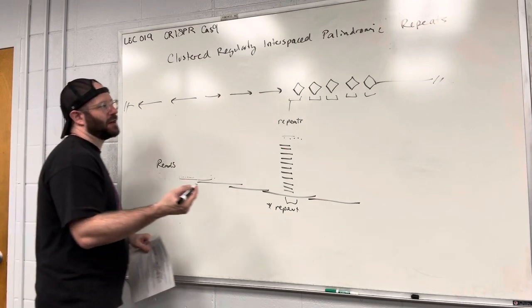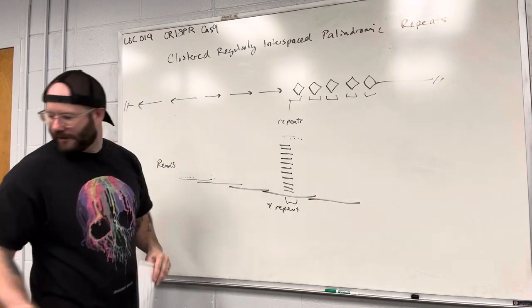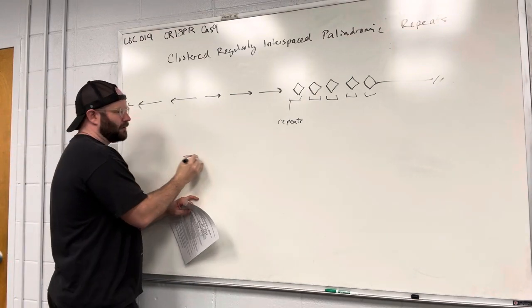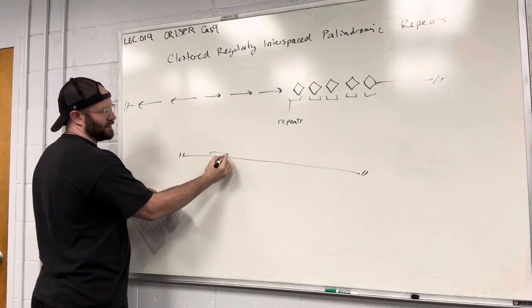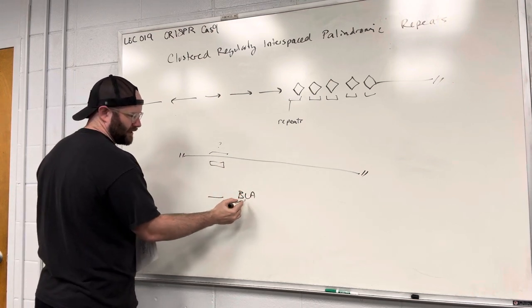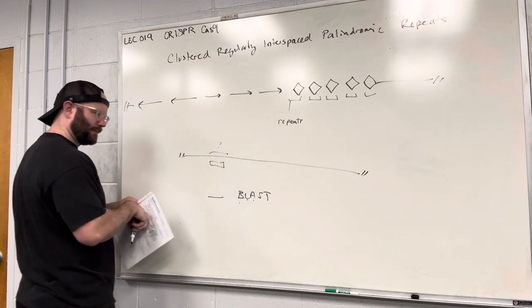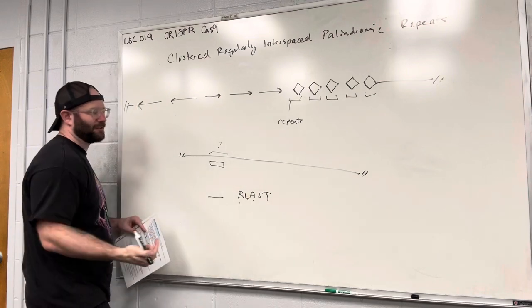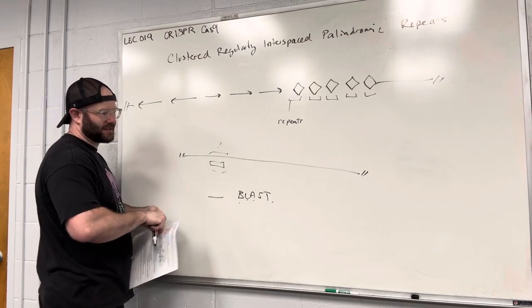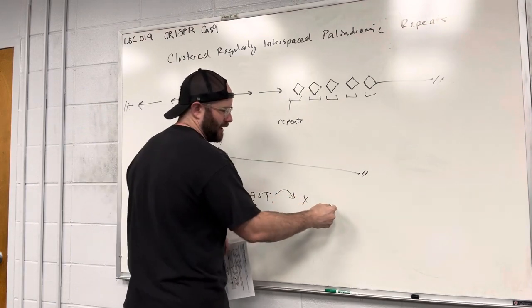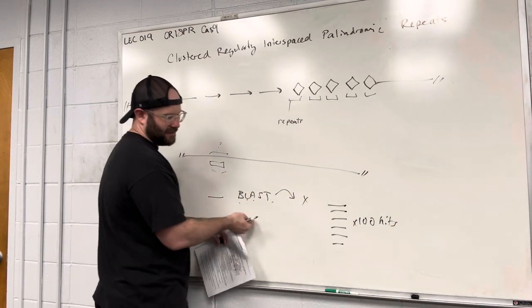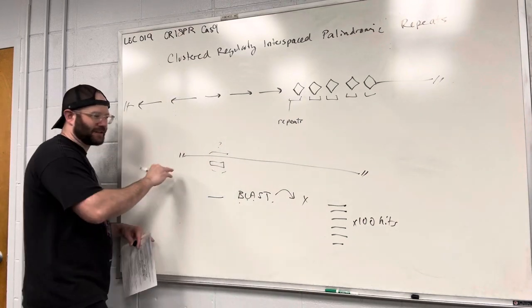Another way to identify repeats is you might take some section of a genome that strikes your interest and run a BLAST — Basic Local Alignment Search Tool. You'll run a BLAST against some particular organism. If you get alignments for like a hundred hits within that organism, that would indicate that is a repeat sequence. So those are different ways you can detect repeats.